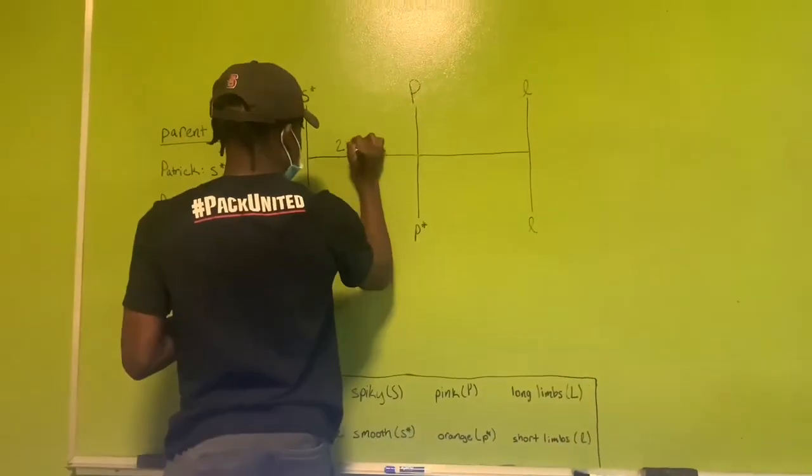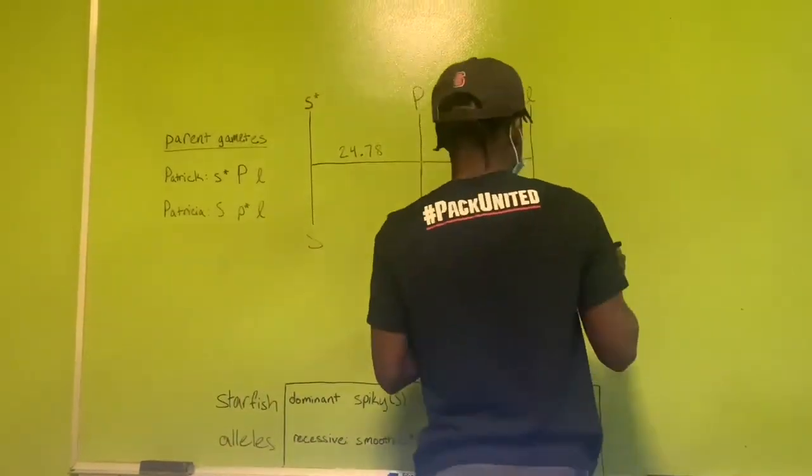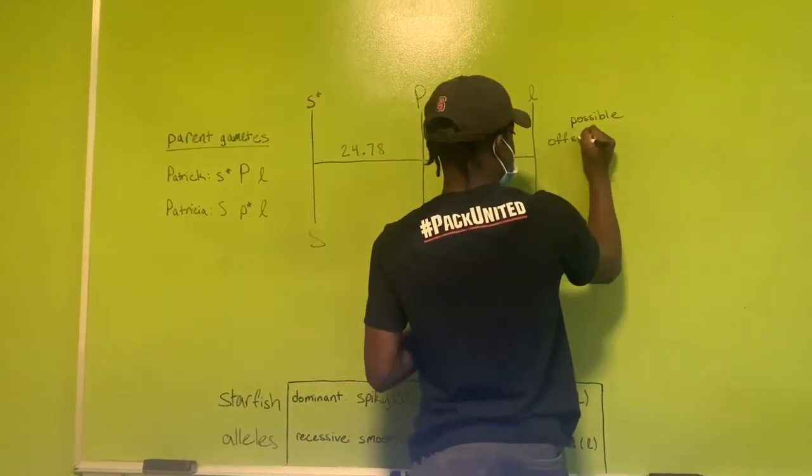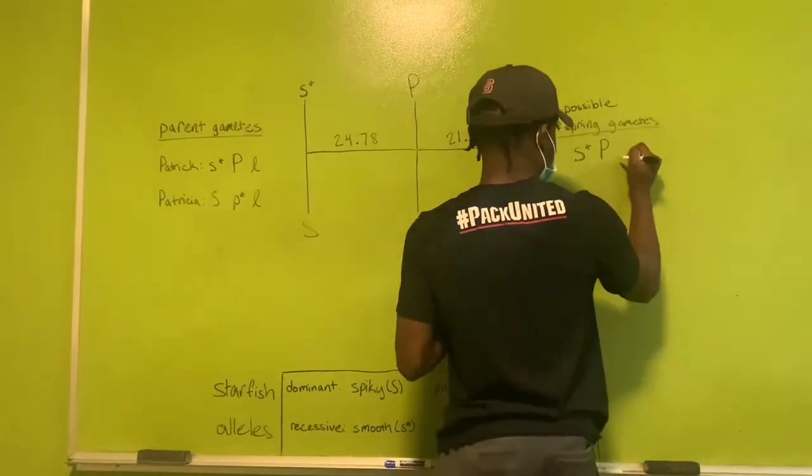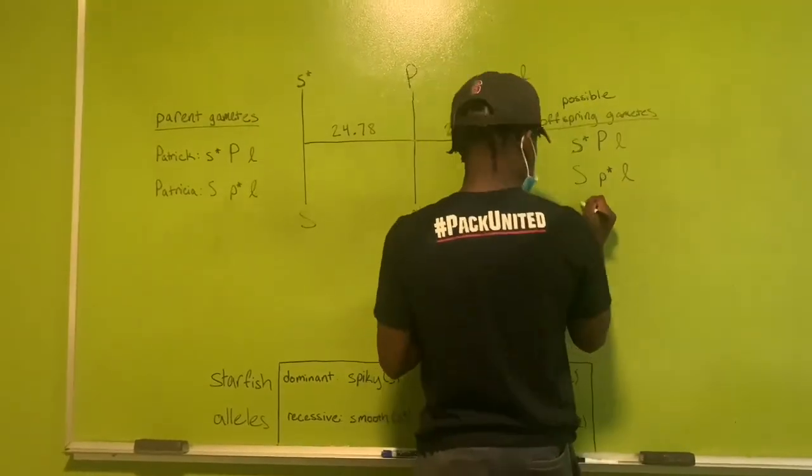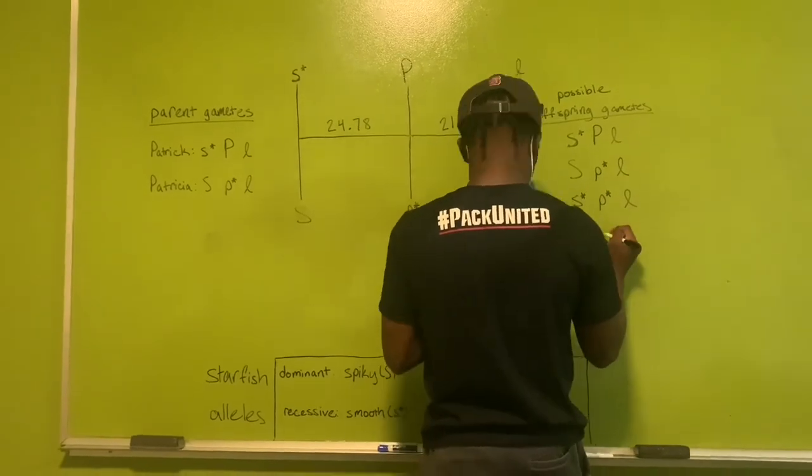And here's my illustration of the genetic map. I calculated my r1 value to be 24.78 and the r2 value to be 21.10. And I found the coefficient of confidence to be 0.6805.